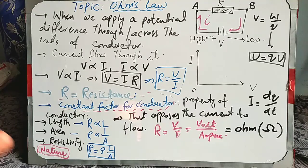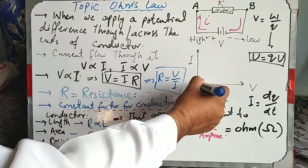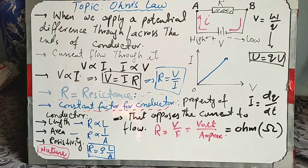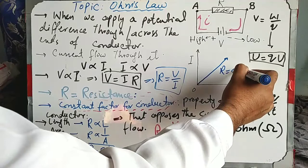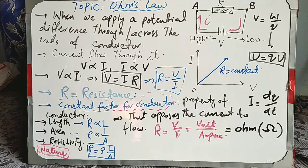There is also a graphical representation of Ohm's law. We take potential difference along the x-axis and current along the y-axis. When we plot the graph for the relation between voltage and current, it will be a straight line. A straight line means R equals a constant — the ratio of V and I always gives a constant factor. So this defines the graphical analysis of Ohm's law.